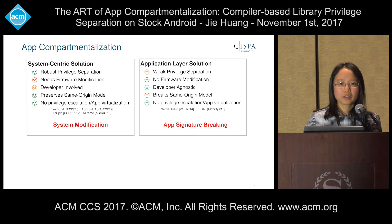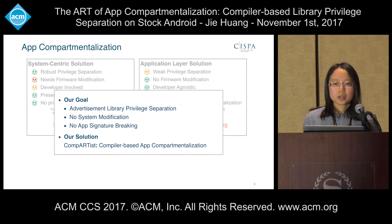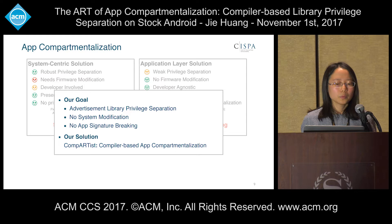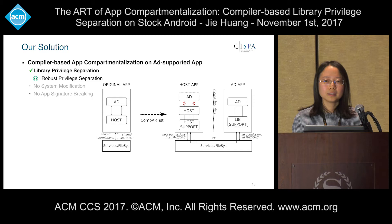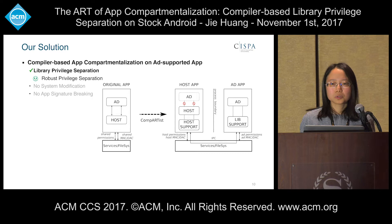Considering this situation, we try to solve this problem from a different perspective. We use advertising library as our target and try to find a library privilege separation model which can be deployed with no need of system modification and app signature breaking. Our solution is a compiler-based app compartmentalization mechanism named Compartist. Since Android's privileges are bound to user ID, to establish a robust library separation model, we split an ad-supported app into two different applications, each with a distinct UID and running in its own sandbox.